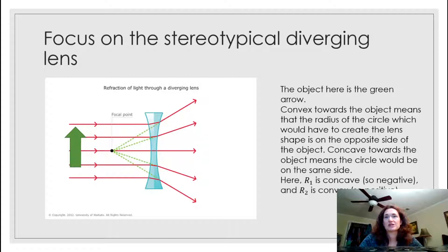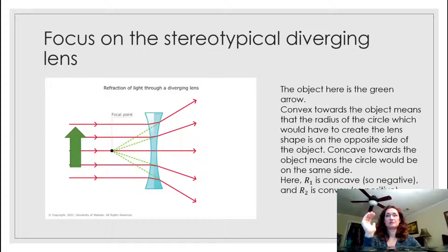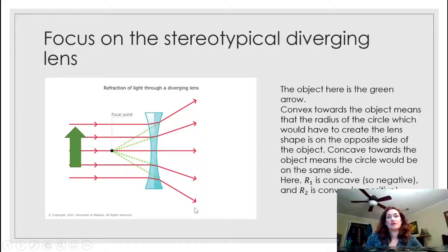Concave towards the object means the circle would have to be on the same side. So here's the object, here's the lens — this side is concave towards it, and the radius of the circle is over on the near side. Since our object is this green arrow, R1 — the radius of curvature on the near side — is concave, so it's negative. But R2 — the radius of curvature on the far side — the center of the circle is on the far side from the object, so that's convex, making R2 positive.